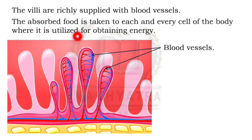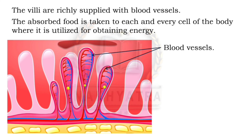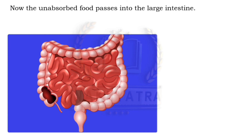The absorbed food is taken to each and every cell of the body, where it is utilized for obtaining energy. The unabsorbed food then passes into the large intestine.